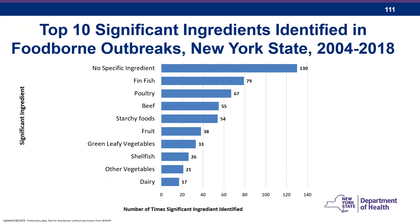The top 10 significant ingredients in our foodborne disease outbreaks show that finned fish has been the most common, mostly associated with scombrotoxin and sometimes ciguatoxin. This is followed by poultry — where we see a lot of campylobacter and salmonella — and beef, where we see E. coli and other pathogens. Fruits are often associated with contaminated incoming product or handling by an infected worker. Green leafy vegetables have been seen in both bacterial and viral outbreaks.